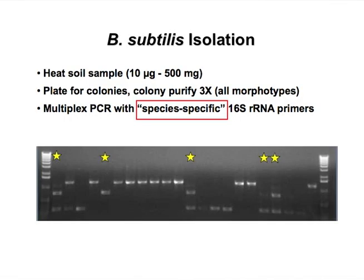You might notice that 'species-specific' is in quotes, because as it turns out, 16S is not a particularly good marker for distinguishing Bacillus subtilis from its close relatives. Sometimes 16S works for a bacterial group, and sometimes it doesn't. We know for other reasons that Bacillus subtilis is not within the same species as Bacillus mojavensis, B. vallismortis, or B. amyloliquefaciens — but if you just trusted the 16S, you might think it was. So we can use another marker, another gene that's also highly conserved but a little more genetically flexible.